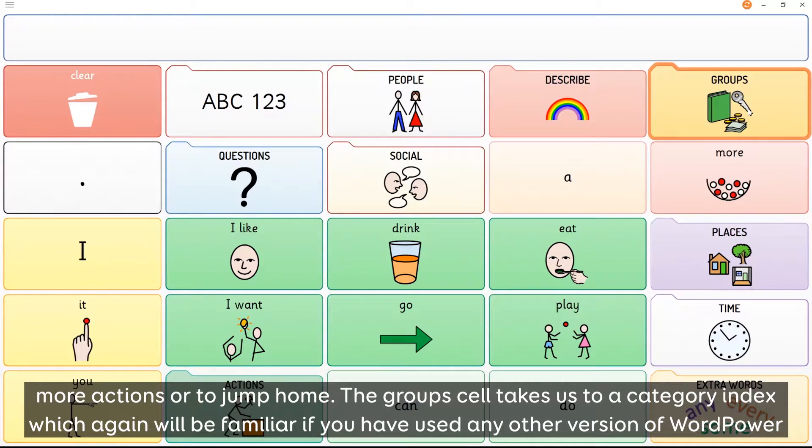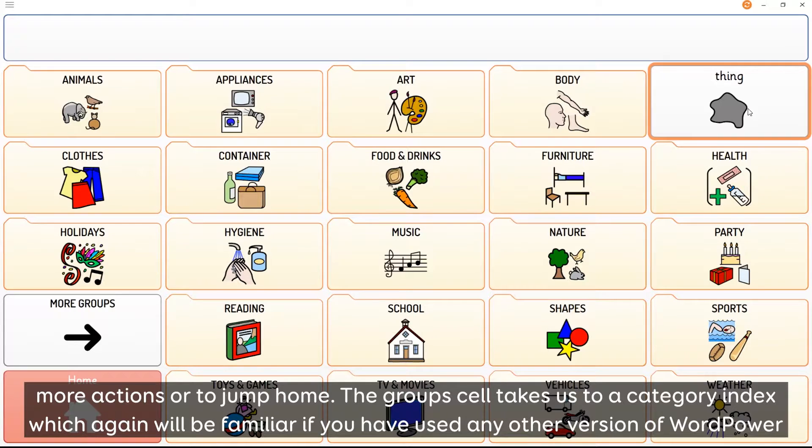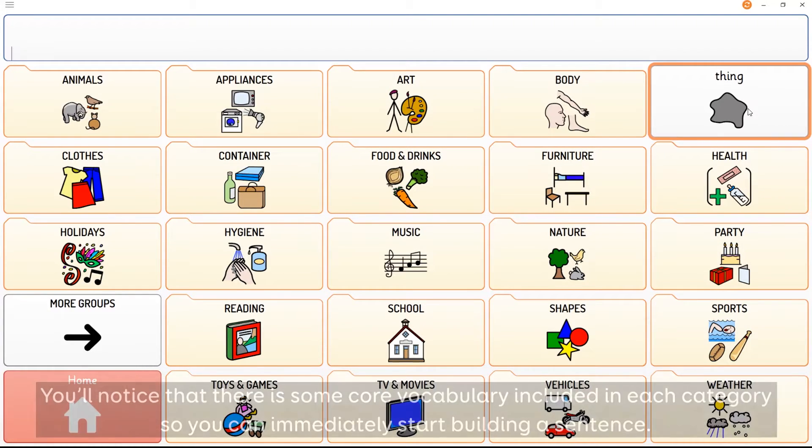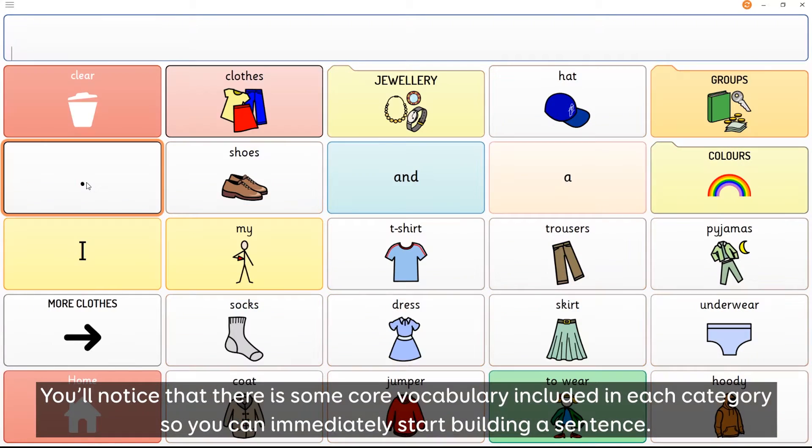The group cell takes us to a category index which again will be familiar if you have used any other version of WordPower. You'll notice that there is some core vocabulary included in each category so you can immediately start building a sentence.